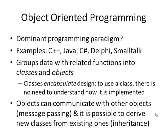Object-oriented programming appears to be really the dominant programming paradigm taught at universities, with examples including C++, Java, C Sharp, Delphi, and Smalltalk — probably also the dominant paradigm in commerce, industry, and game development. Object-oriented programming groups data with related functions into what are called classes and objects. The idea is that classes encapsulate some elements of design: to use a class, you just need to know what functions it provides. Objects can communicate with other objects by passing messages, and you can create new classes from existing ones using inheritance.